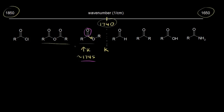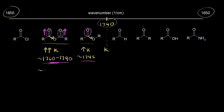Next, for an acid anhydride, the inductive effect is even more important. Thinking about the oxygen as being very electronegative, we get an even higher value for K — an even stronger carbonyl — giving a higher frequency of vibration and a higher wave number. The signal goes up to approximately 1760 to 1790, which is the first signal for an acid anhydride — the symmetrical stretch, where both carbonyls stretch in phase. There is also an asymmetric stretch, which requires a bit more energy and appears at a higher wave number — approximately 1810. So acid anhydrides show two signals.